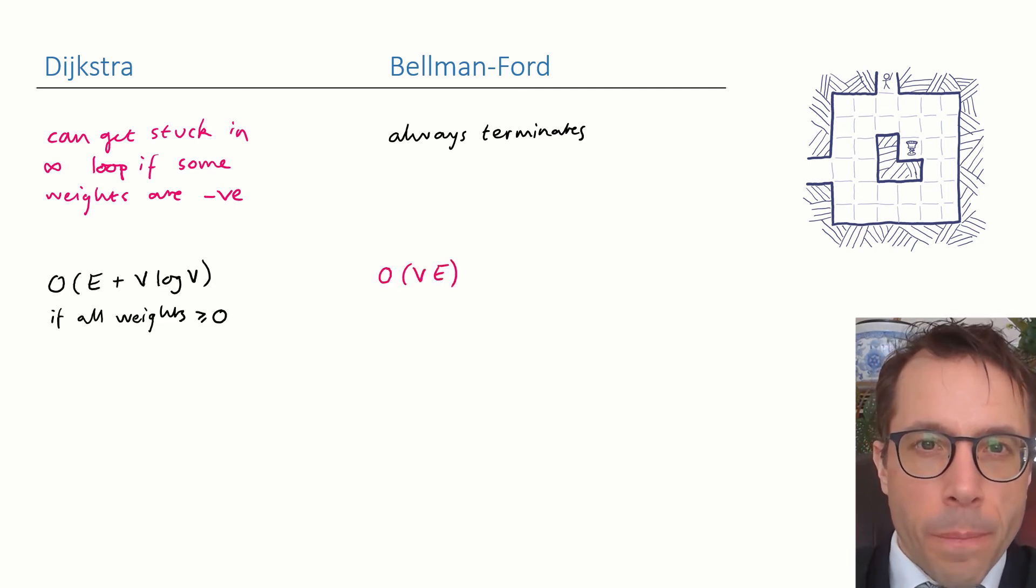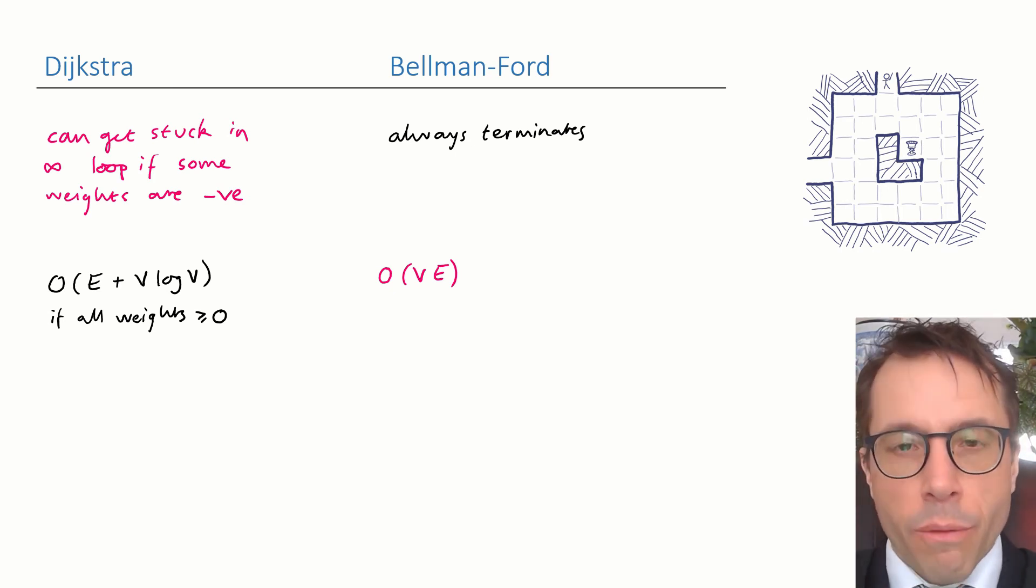What about running time? Well, in the happy case for Dijkstra's algorithm, when all edge weights are above or equal to zero, then the running time is big O of E plus V log V, whereas Bellman-Ford is big O of V times E.